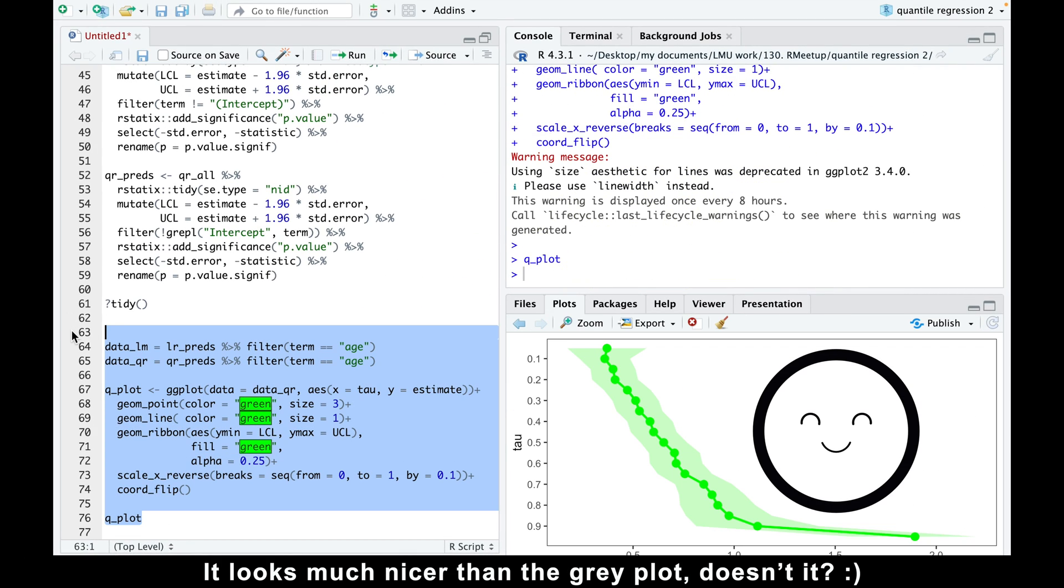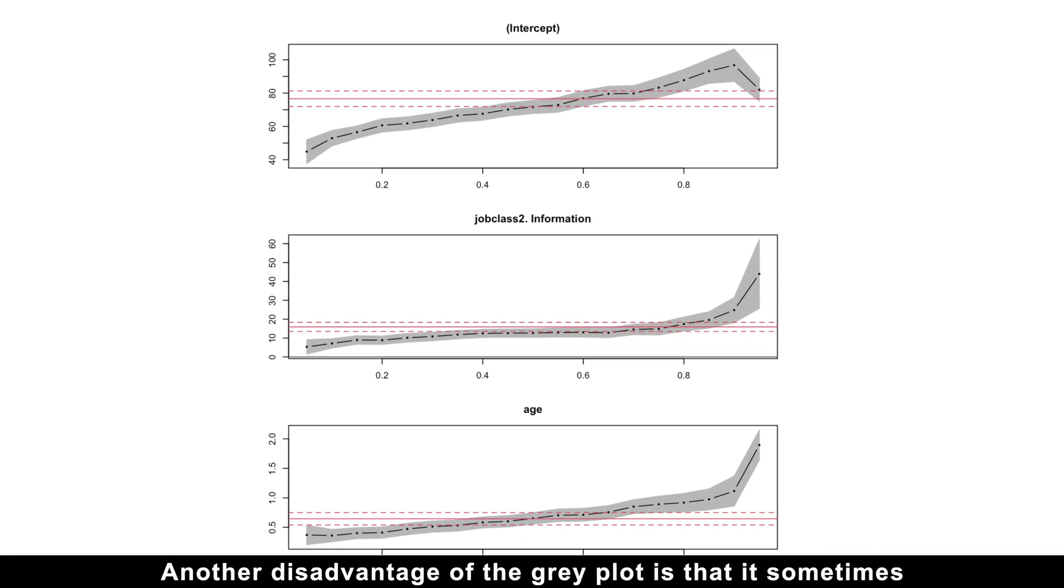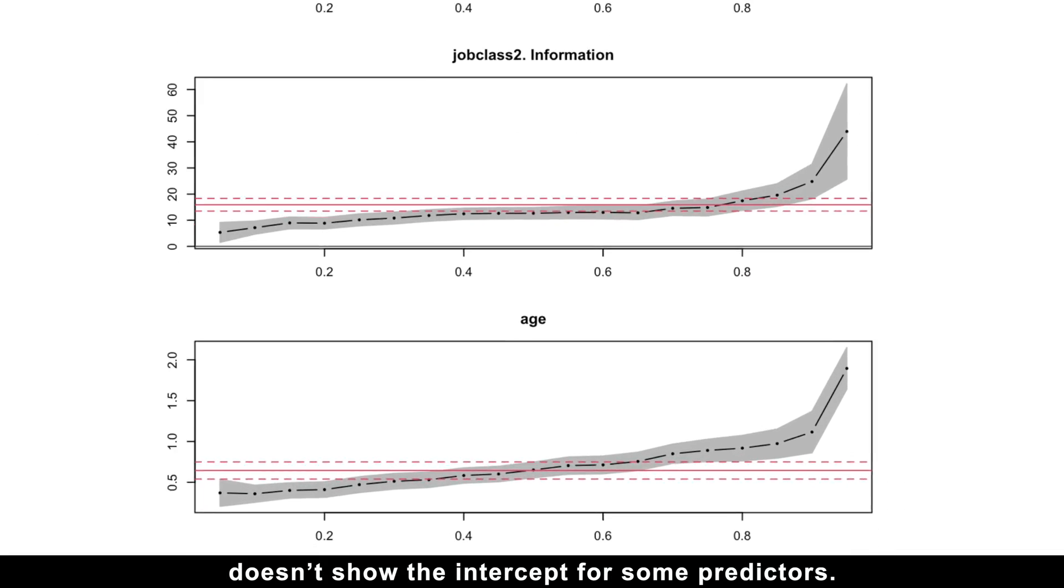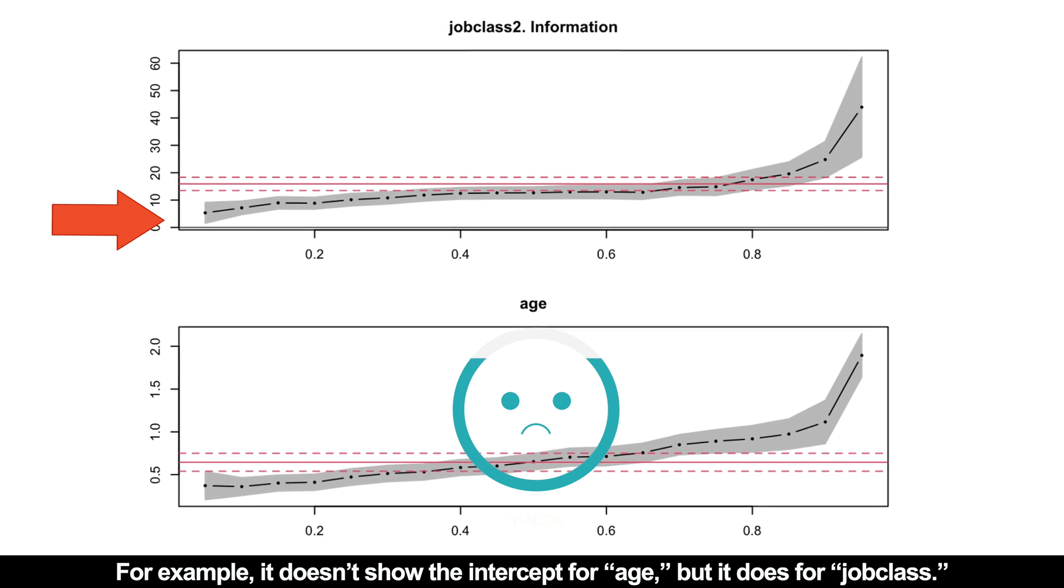It looks much nicer than the gray plot, doesn't it? Another disadvantage of the gray plot is that it sometimes doesn't show the intercept for some predictors. For example, it doesn't show the intercept for age, but it does for job class.